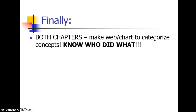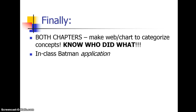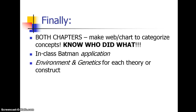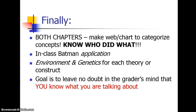Finally, in both chapters — just tons of theories. I recommend making a web or chart to categorize and know who did what: which intelligence person did which theory, which personality person did which theory. Review the Batman application. Keep in mind nature, nurture, or interaction, just as we started out. Be very specific in your writing — your goal is to leave no doubt in the grader's mind that you understand all of this information. Good luck, and come see me if you have any questions.